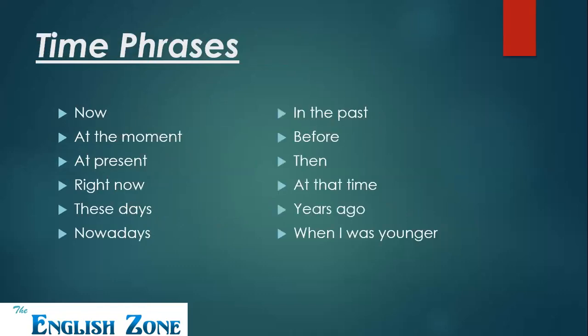Next: time phrases. If we want to talk about time — present, past, or future — future is a very rare case. Normally we discuss the past or present because most questions are based on these two tenses. For the present we use: now, at the moment, at present, right now, these days, nowadays. For the past we use: in the past, before, then, at that time, years ago, when I was younger.